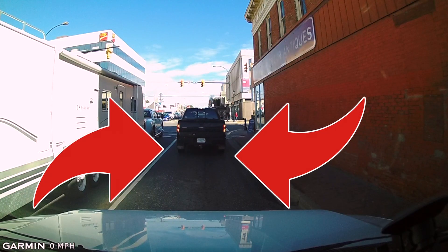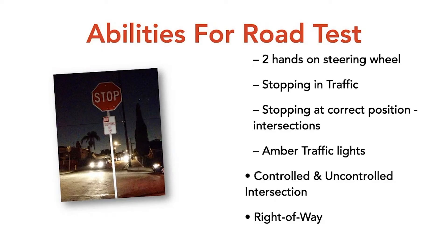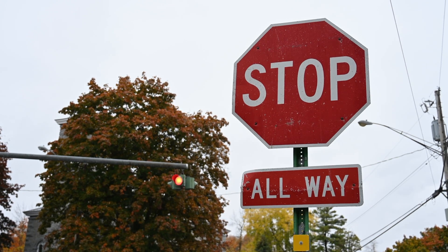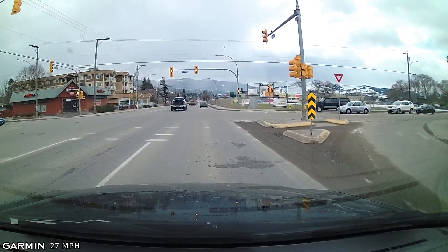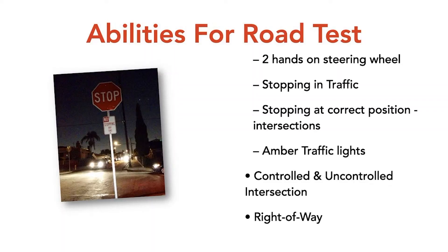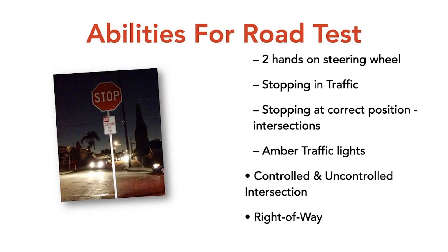Abilities for your driver's test: two hands on the steering wheel; stopping in traffic so you can see the tires of the vehicle in front making clear contact with the roadway; correct stopping position at controlled intersections — behind the stop line, before the crosswalk or sidewalk, or at the edge of the road where two roads meet. You must stop at yellow and red traffic lights — they mean the same thing for purposes of the driver's test. And know that right-of-way is never taken; it is always given. Another driver must give it to you before you can go.